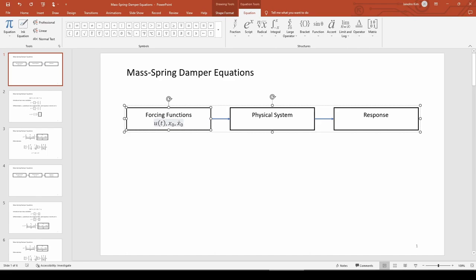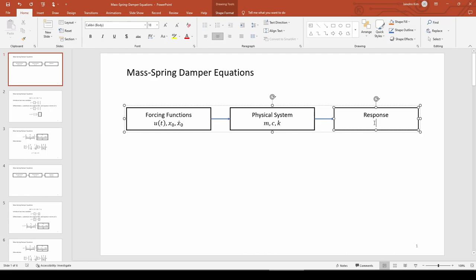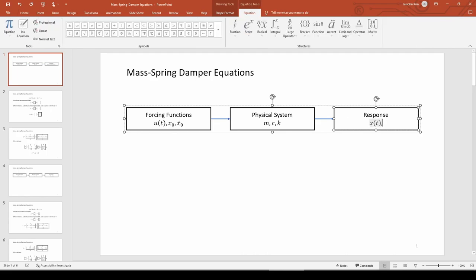The system parameters are m, c, and k. These define the makeup of the physical system. And finally, the responses are the mass's position and velocity. These are the quantities we are interested in obtaining. Okay, that's the cause-effect diagram.